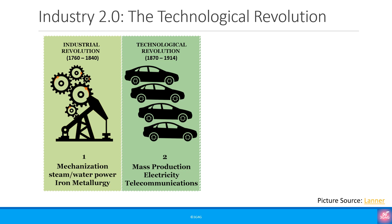Industry 2.0, or the second industrial revolution, is also known as the technological revolution. It roughly covered the period between 1870 and 1914. It was made possible with the extensive railroad networks and the telegraph, which allowed for faster transfer of people and ideas. Electricity was now available and allowed for factory electrification and the modern production line. It's also a period of great economic growth with an increase in productivity. However, this caused a surge in unemployment because many workers were replaced by machines and factories.